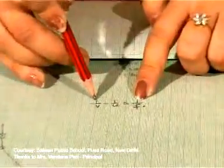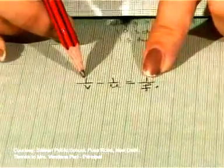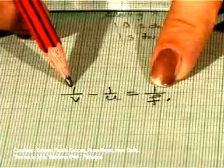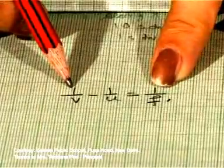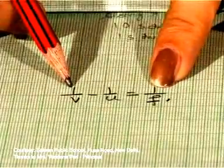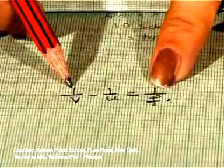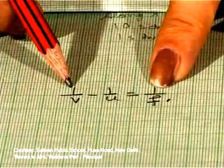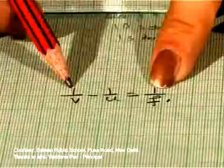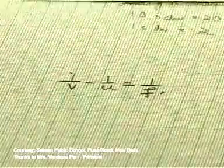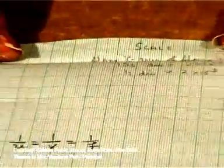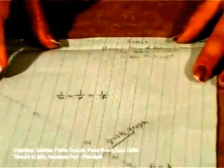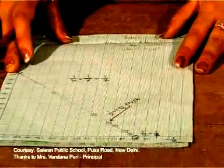So students, now you know three different methods of calculating 1/f — and finally f — once you have taken the v and u readings on the optical bench. We are through with calculating the focal length of the convex lens.